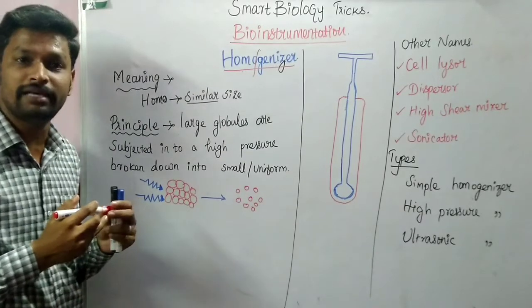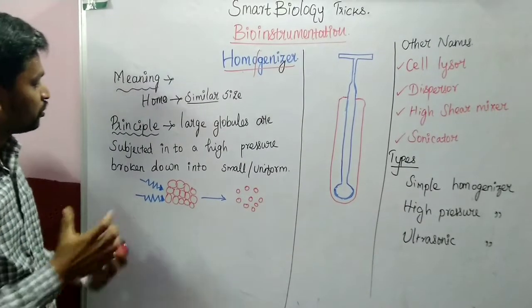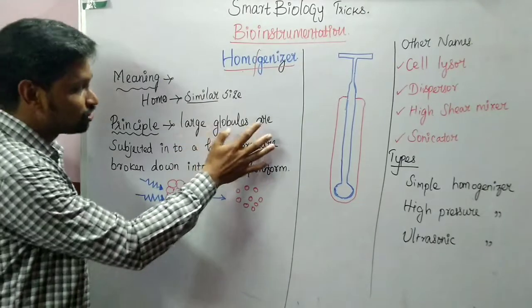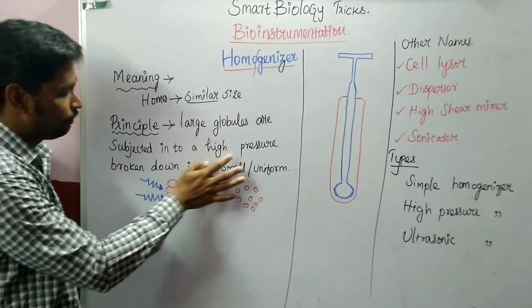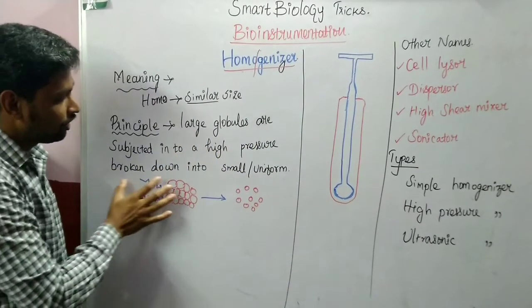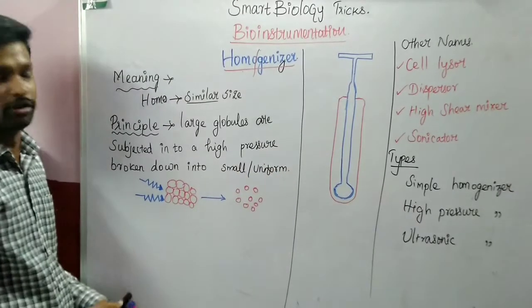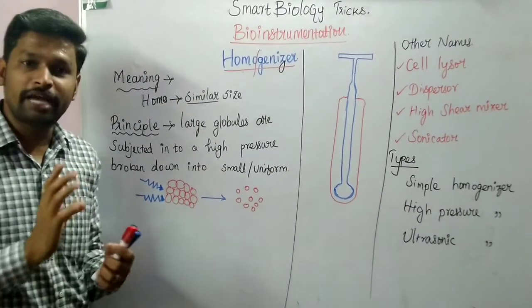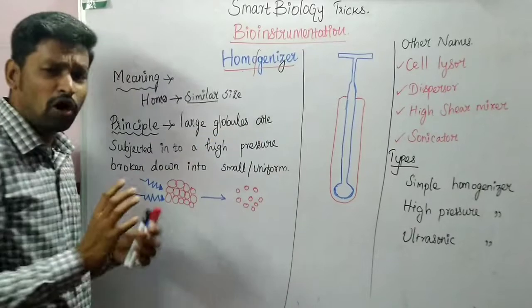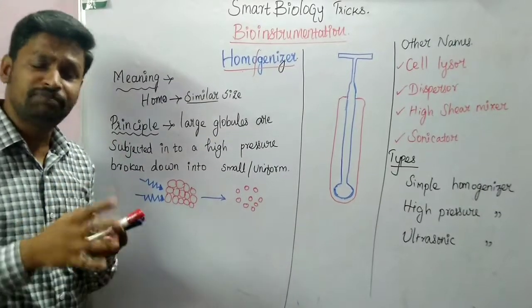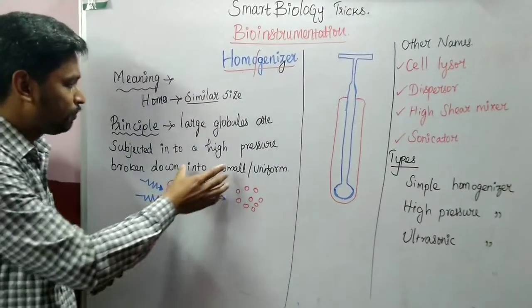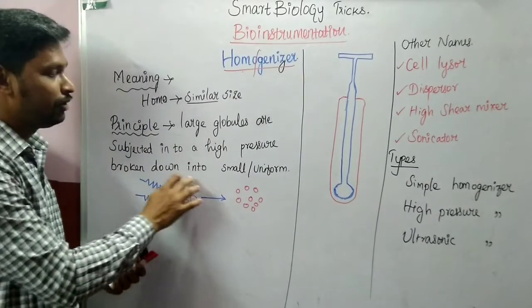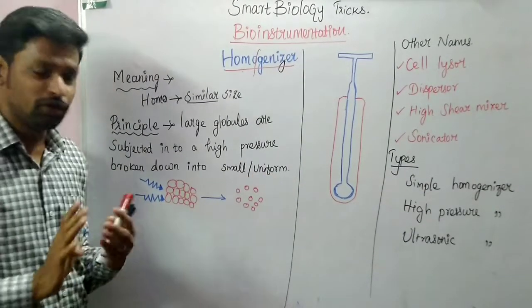If you understand the meaning of homogenizer, with the help of this instrument you can make similar types of products. The principle of this instrument is that large globules are subjected to high pressure and broken down into smaller and uniform ones whenever larger molecules are subjected to high pressure in a narrow space.